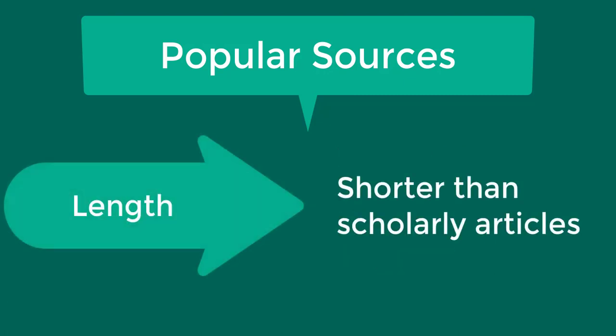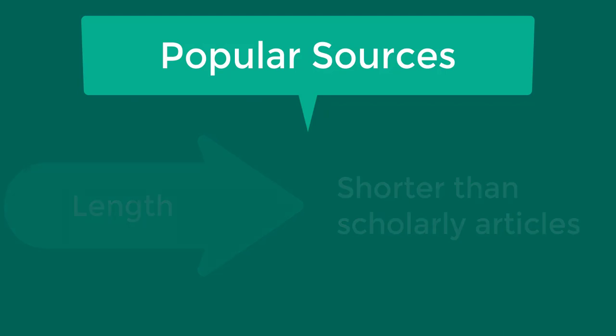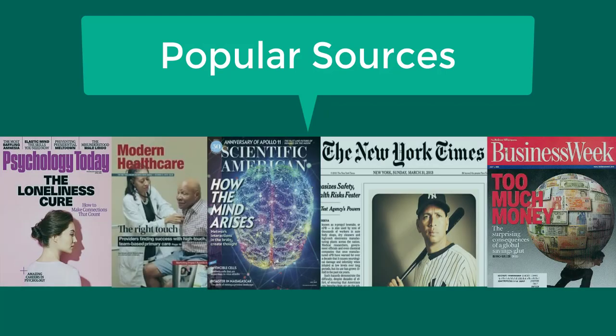The length of popular articles is usually shorter than scholarly articles and can be about 200 words to a few pages. Here are some examples of popular sources.